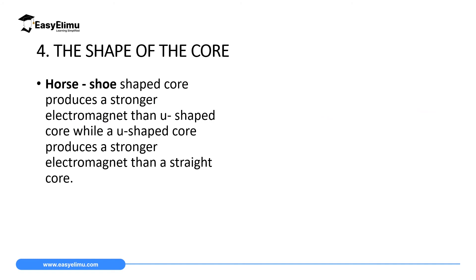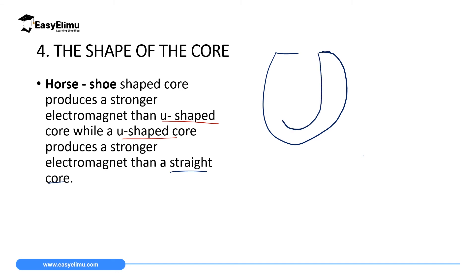The fourth factor that affects the strength of an electromagnet is the shape of the core. A horseshoe shaped core produces a stronger electromagnet than a U-shaped core, while a U-shaped core produces a stronger electromagnet than a straight core. What we have been considering has been a straight core, but if we change the shape to be a horseshoe — which looks like this — the two ends are very close, such that if you magnetize it, the north pole and south pole will be very close and the distance between them is very small.